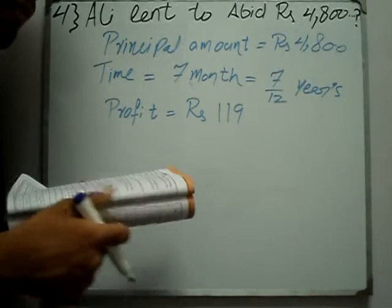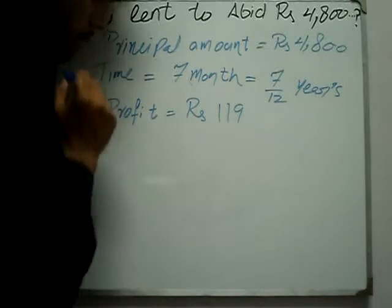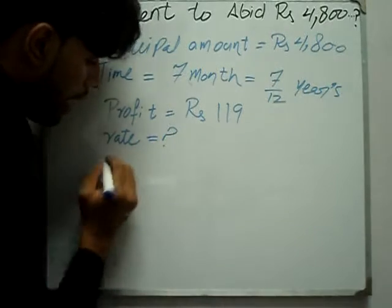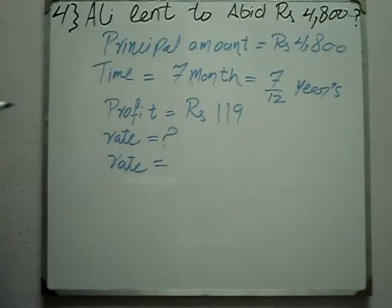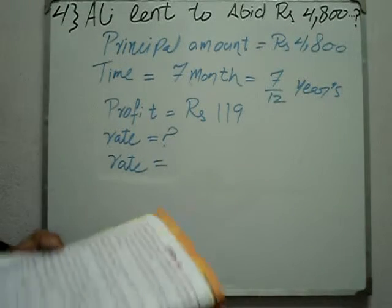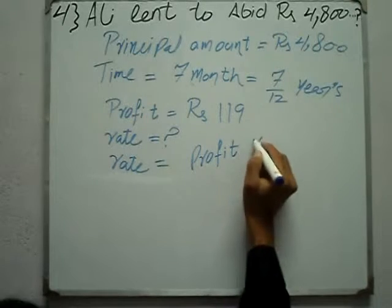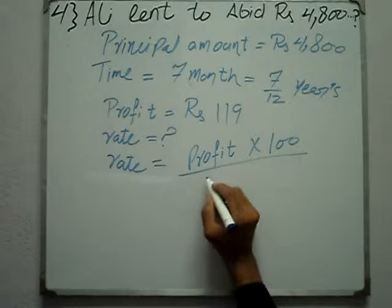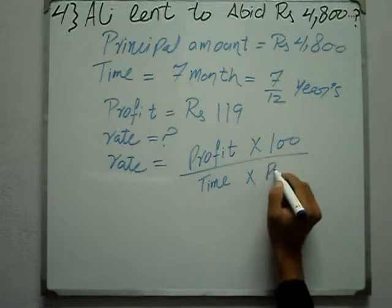Find karna hai rate of simple profit. Formula: Rate = Profit × 100, divided by Time × Principal. Profit ko 100 se multiply karna hai, aur divide karna hai Time aur Principal se.